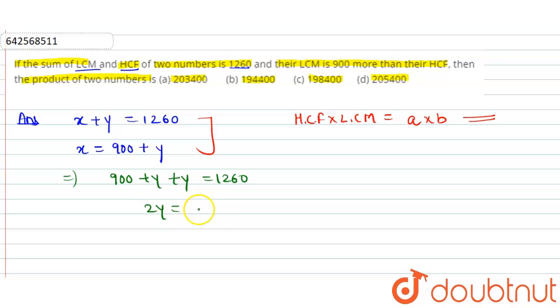So 2y will be equal to 1260 - 900. Therefore, the value of 2y will be equal to 360. Therefore, the value of y will be equal to 360 ÷ 2, which is equal to 180. So we get the value of y.